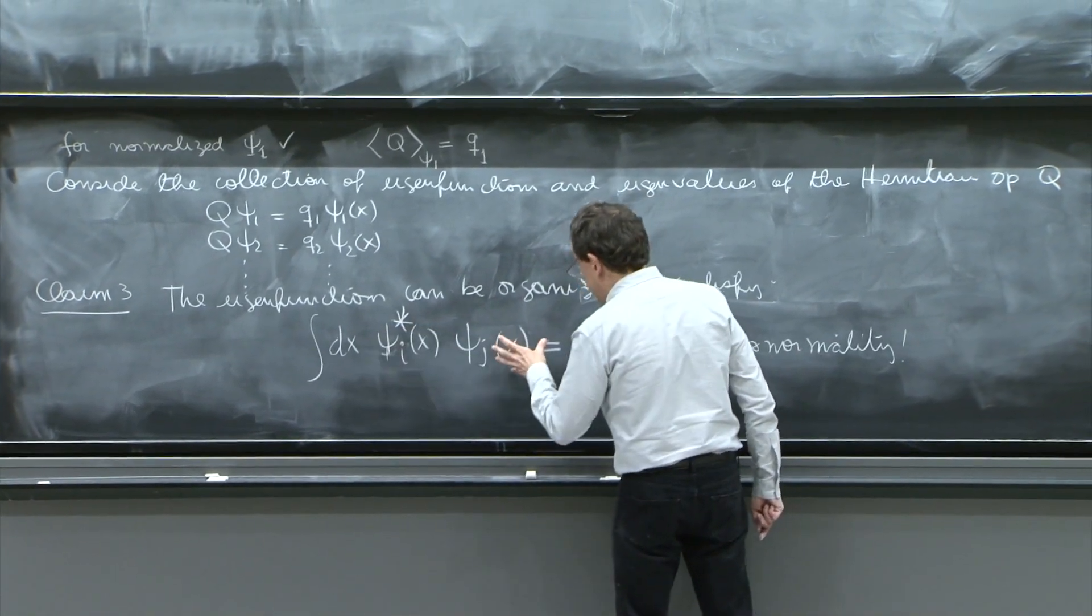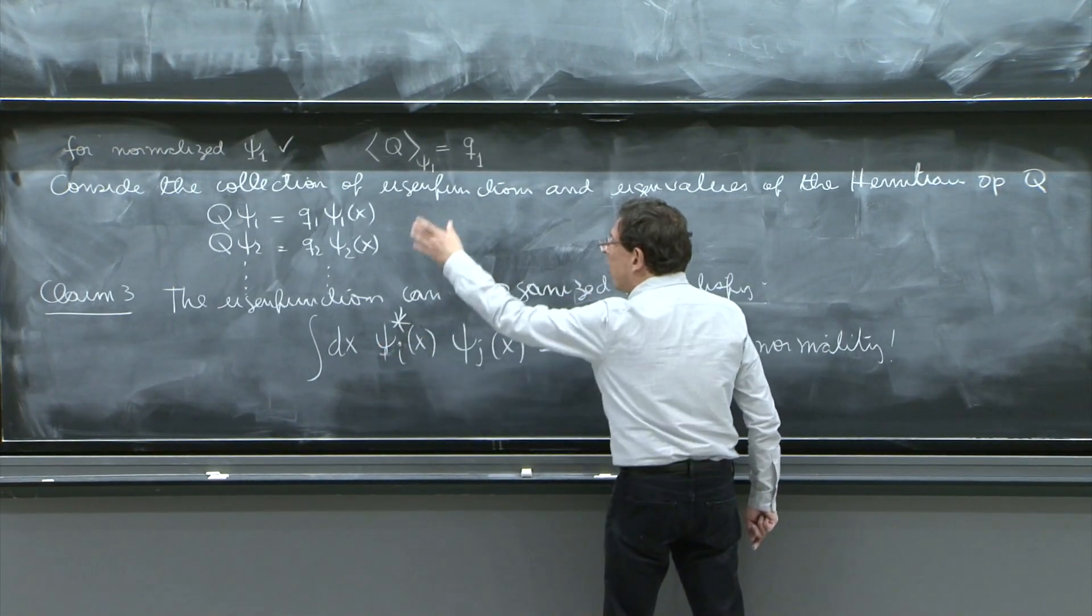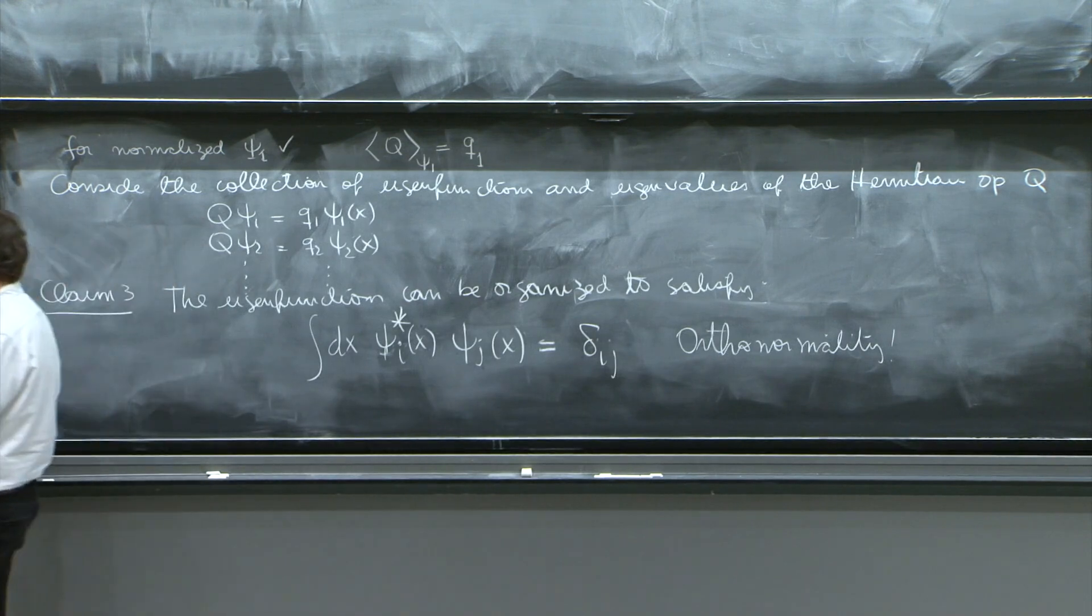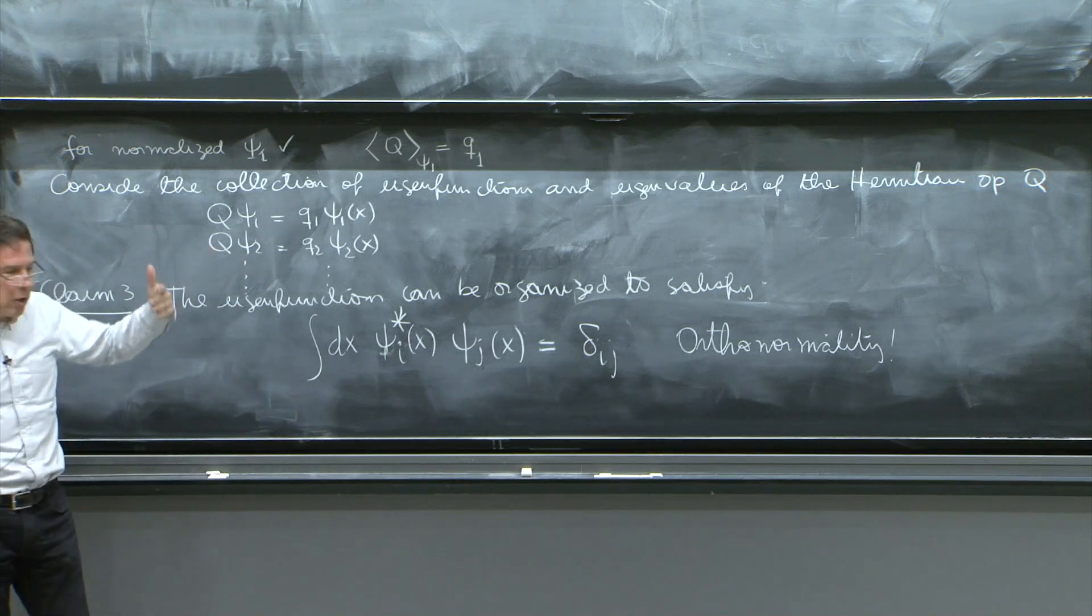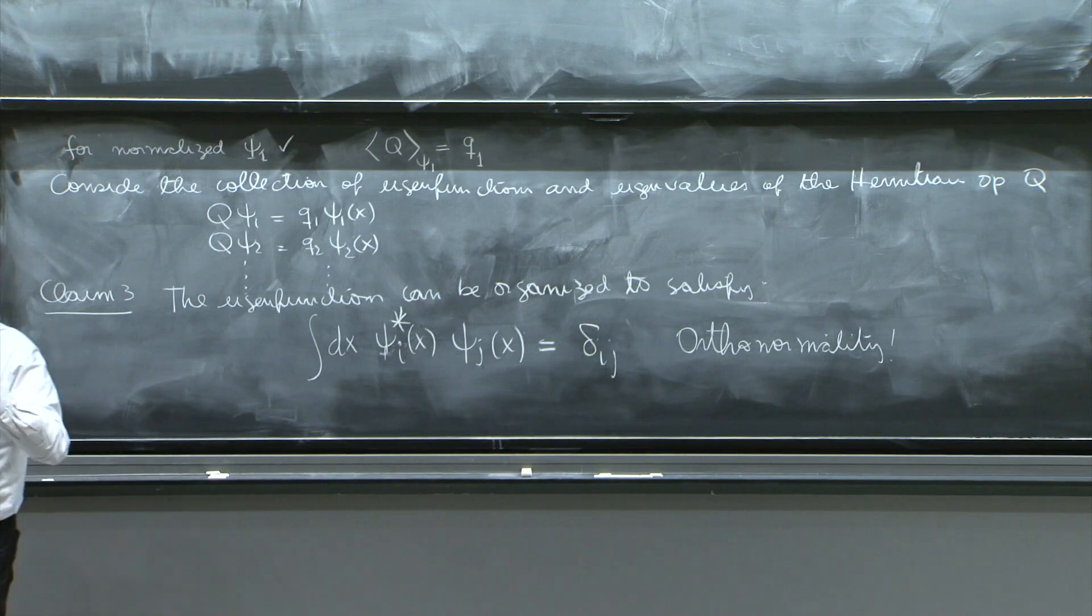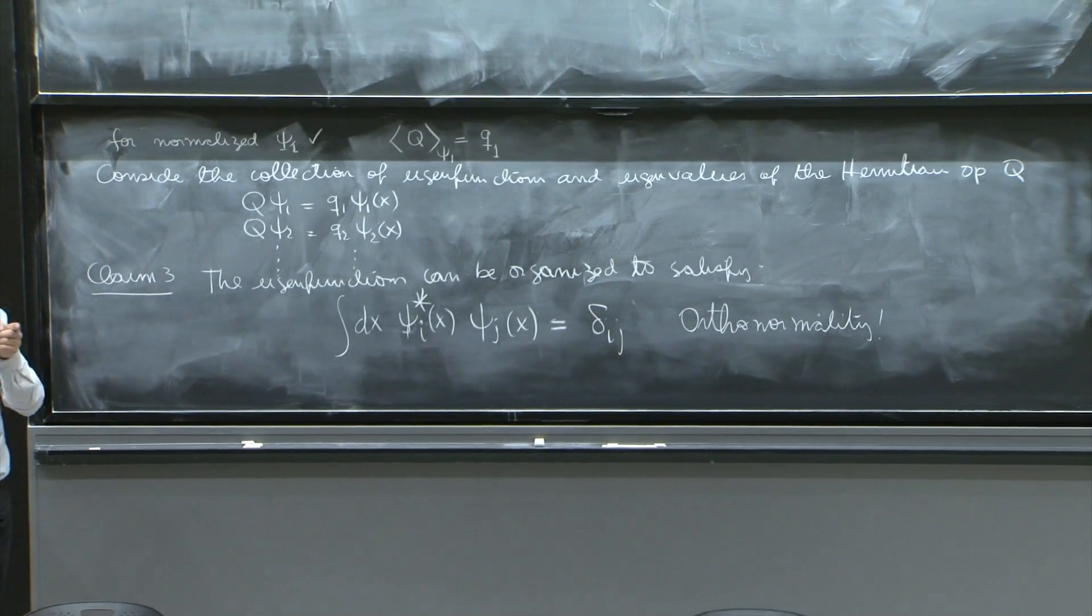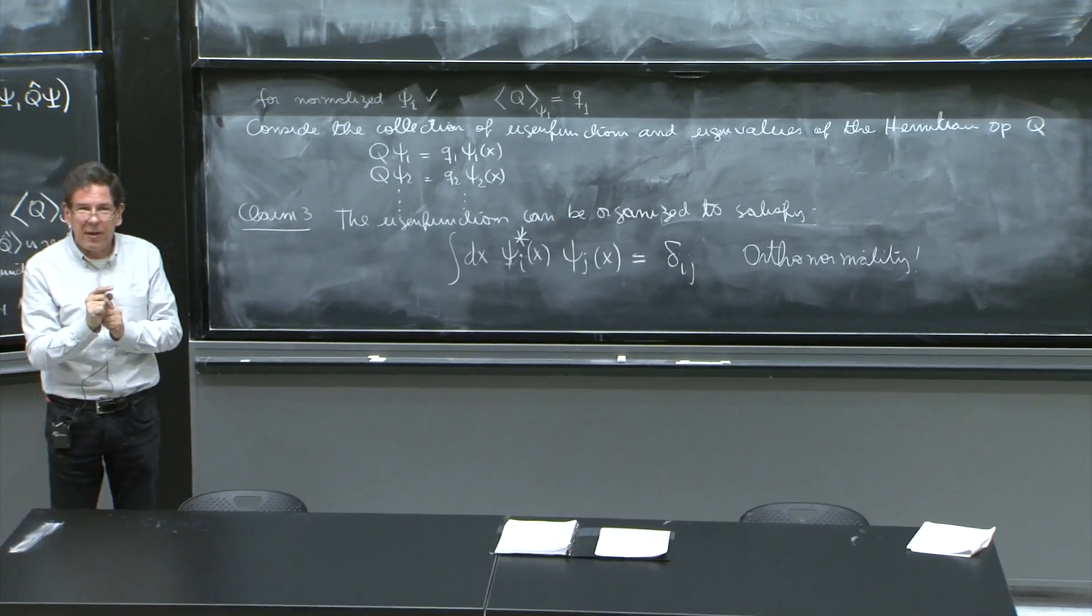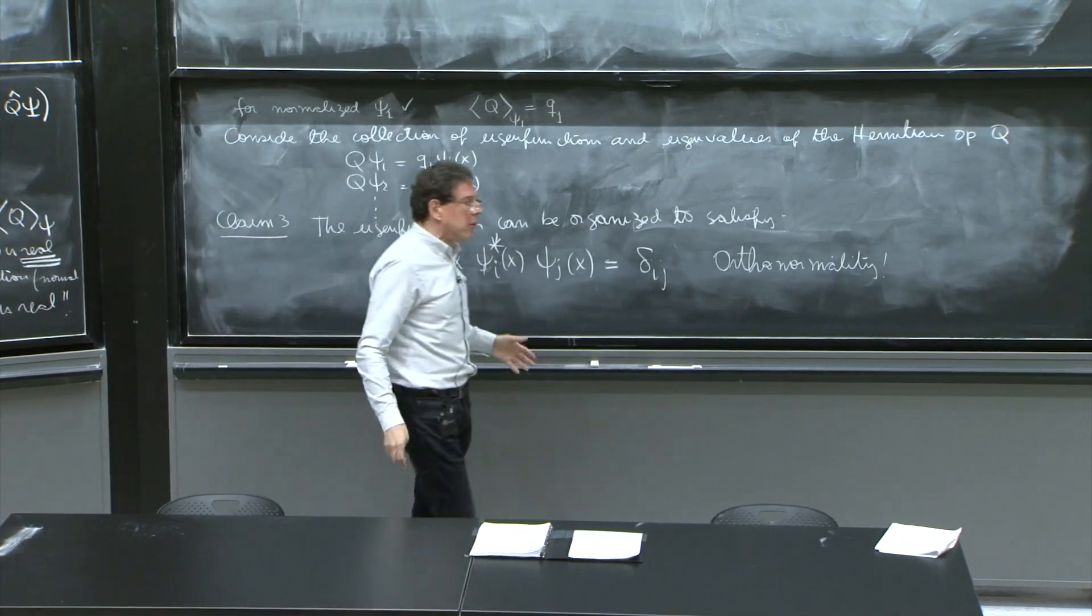So psi 1, the norm of psi 1 is 1, the norm squared. Psi 1, psi 2, psi 3, all of them are well normalized. They satisfy this thing we wanted them to satisfy. Those are good states. But even more, any two different ones are orthogonal. This is like the three basis vectors of R3. The x-basis unit vector, the y-unit vector, the z-unit vector. Each one has length 1, and they're all orthogonal.